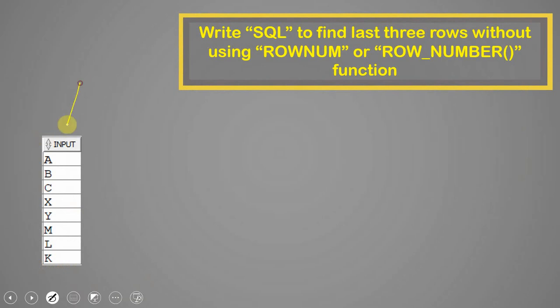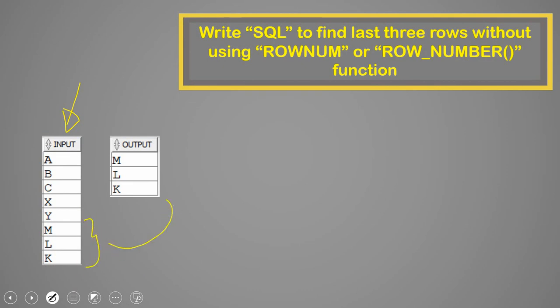Here is our input table which contains some records like ABC, XY, ML, and K. The expectation is we need to write a query to get the last three records. So in this case, our expected output is ML and K.